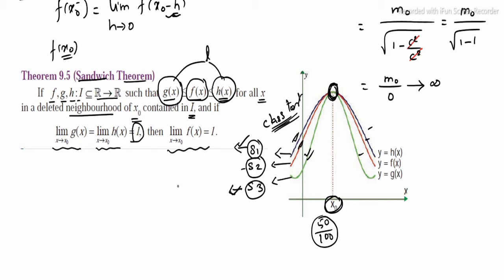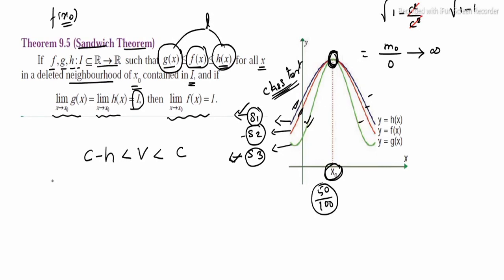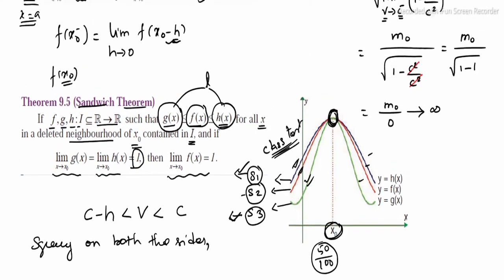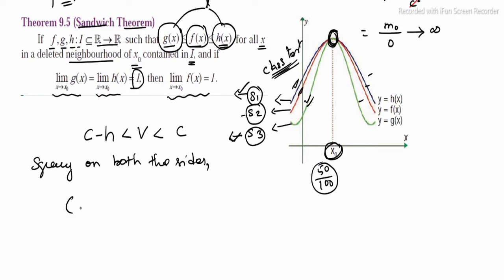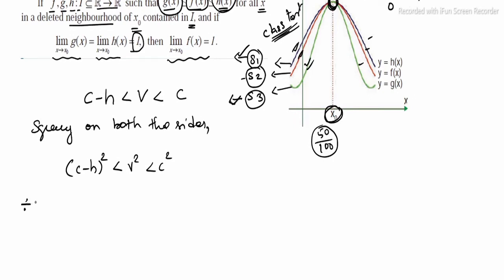The maximum speed is c, so velocity v is less than the speed of light. This is the smallest value condition, h0. Now we square both sides of the inequality — squaring changes the values in the inequality. We square in order to work with v squared divided by c squared in the function.